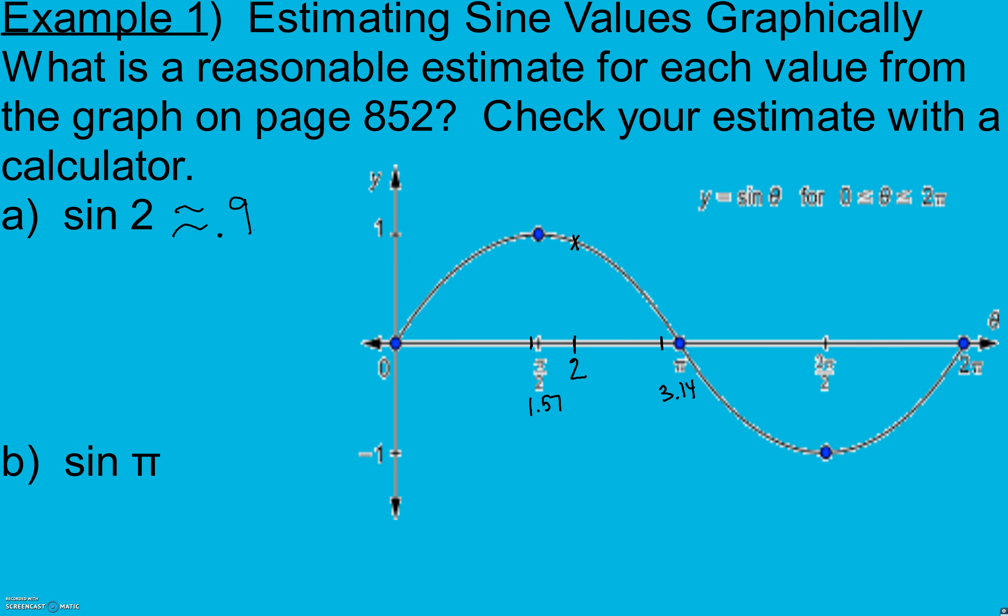Some of you might have said 0.8, some of you might have said 0.95. It doesn't matter. Now we're going to check that with our calculator. When we do that, we have to make sure that our calculator is in radians. There's no degree after the 2, which means we're in radians.